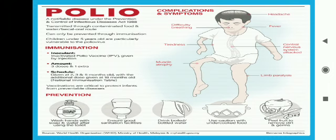In summary, polio is a viral disease that transmits via contaminated food and the fecal-oral route, and can only be prevented through immunization. Children under five years old are particularly vulnerable. Inactivated polio vaccines are given by injection; the schedule includes doses at two, three, and five months old, with an additional dose at eighteen months according to the national immunization table. Vaccinations are critical to protect infants from this preventable disease.